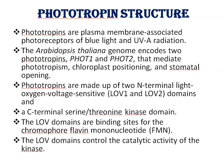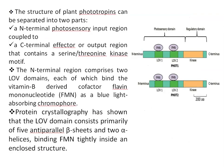LOV domains are binding sites for the chromophore flavin mononucleotide, FMN. LOV domains control the catalytic activity of the kinase. The structure of plant phototropins can be separated into two parts: N-terminal and C-terminal. The N-terminal or photosensory input region is coupled to the C-terminal effector or output or regulatory region that contains a serine-threonine kinase motif. The N-terminal region comprises two LOV domains, LOV-1 and LOV-2, each of which binds to the vitamin B-derived co-factor flavin mononucleotide, FMN.